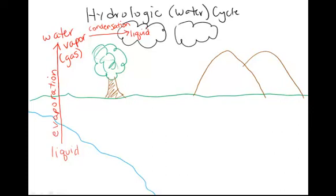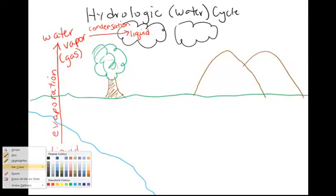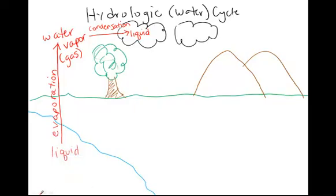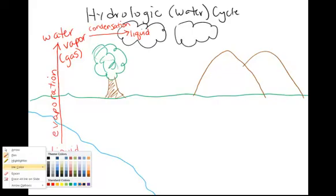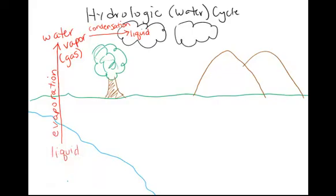And as those liquid water molecules now accumulate in those clouds, they get heavier and heavier. And they're going to return to earth as rain, snow, sleet, hail.